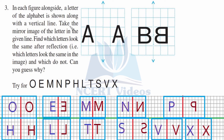Question 3: Each figure shows a capital letter of the alphabet alongside a vertical line. Using the vertical line of symmetry, take the mirror image of the letter and find which letters look the same after reflection and which do not — and can you guess why? For letter A, we are able to view the same image in the mirror because A has a vertical line of symmetry. Letter B does not have a vertical line of symmetry — it has a horizontal one — so you are not able to reproduce it on the vertical mirror.